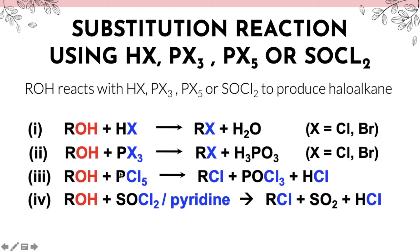Alcohol reacts with PCl₅: only one Cl replaces the OH group in alcohol, giving RCl plus POCl₃ plus HCl — accounting for all five Cl atoms: one in haloalkane, three in POCl₃, and one in HCl. Last, alcohol reacts with SOCl₂ or pyridine: one Cl replaces OH in alcohol, giving RCl plus SO₂ plus HCl.